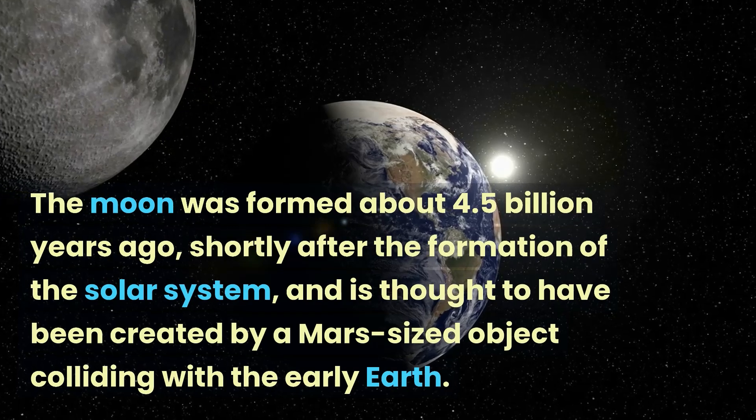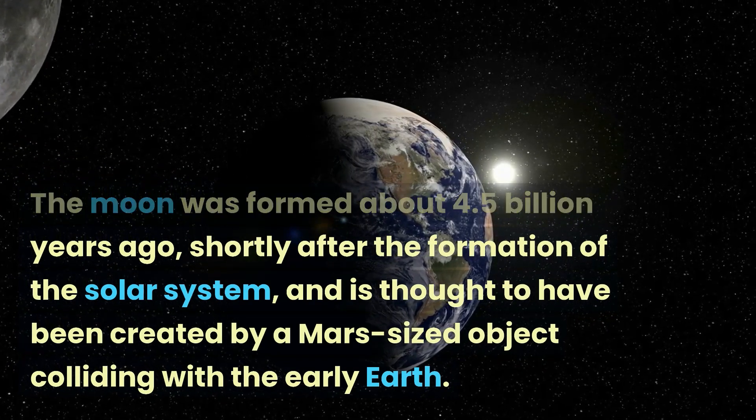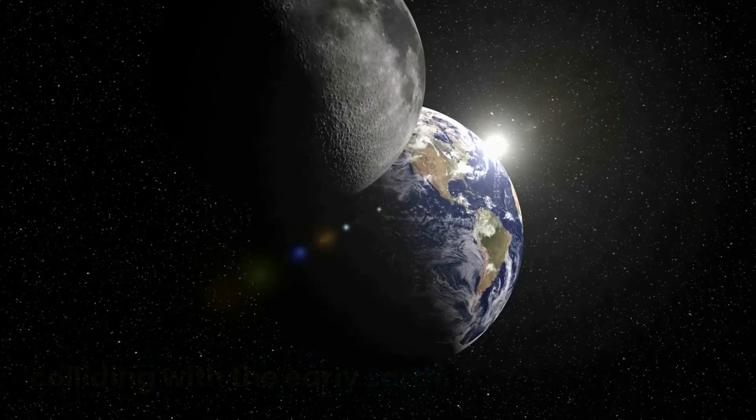The Moon was formed about 4.5 billion years ago, shortly after the formation of the solar system, and is thought to have been created by a Mars-sized object colliding with the early Earth.